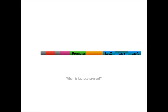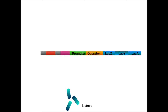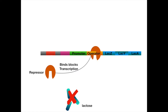But how does it know when lactose is present to metabolize lactose? In between the promoter and the lac genes, there is the operator. When lactose is not present, a protein called the repressor binds to the operator, physically blocking RNA polymerase from transcribing the lac genes.